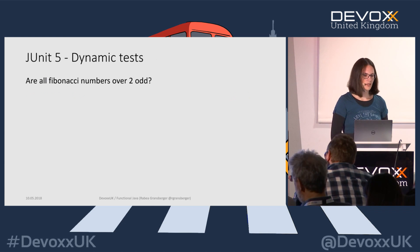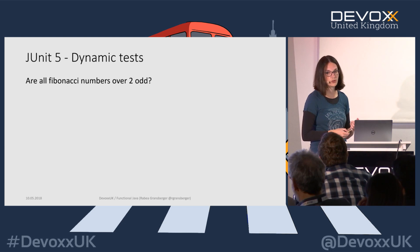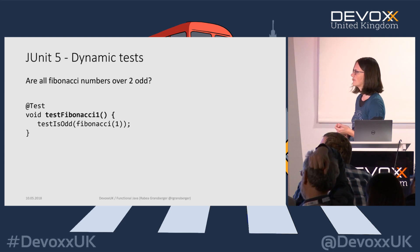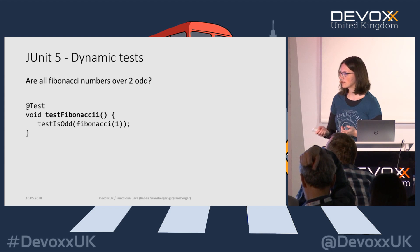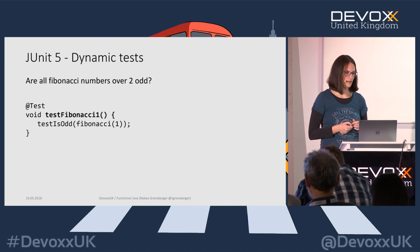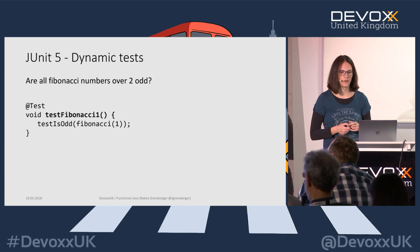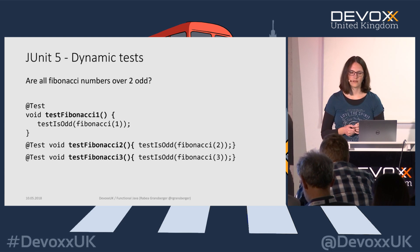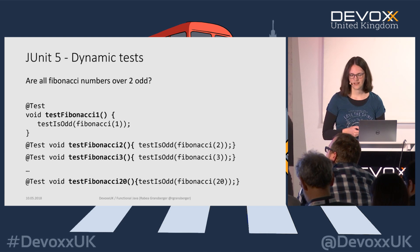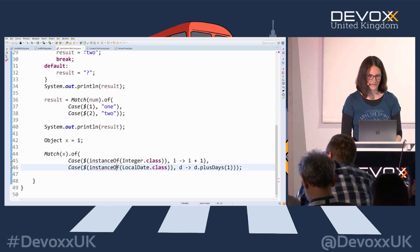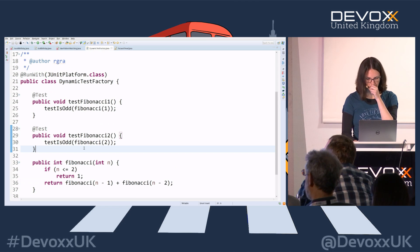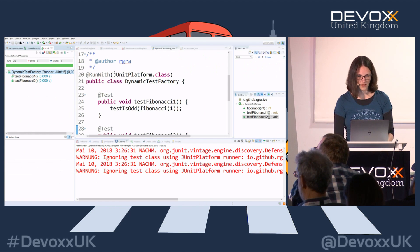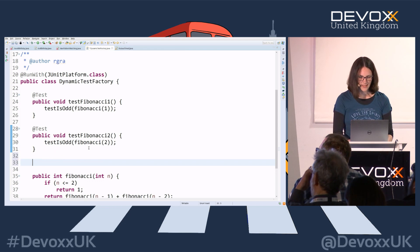Another example: if somebody told us that all Fibonacci numbers above two are odd and we want to test that in a unit test, you'd end up with repetitive individual test methods — `testIsOddFibonacci(1)`, `testIsOddFibonacci(2)`, and so on. That's not really nice to write. But there's actually a better method in JUnit 5. The first two methods show that Fibonacci(1) and Fibonacci(2) are indeed odd.